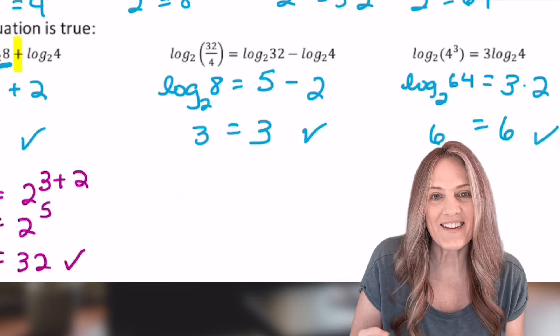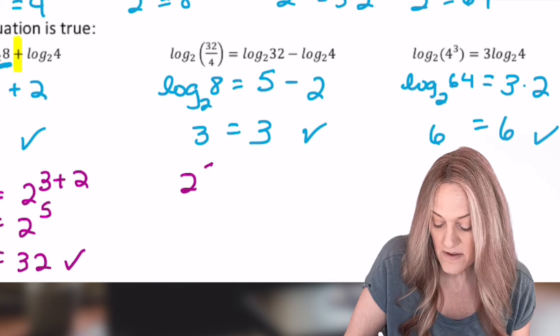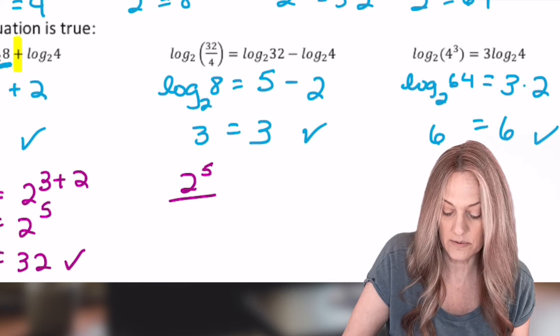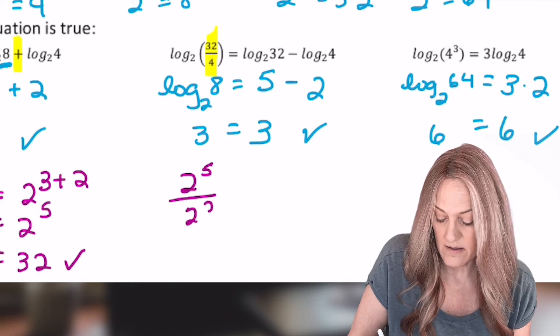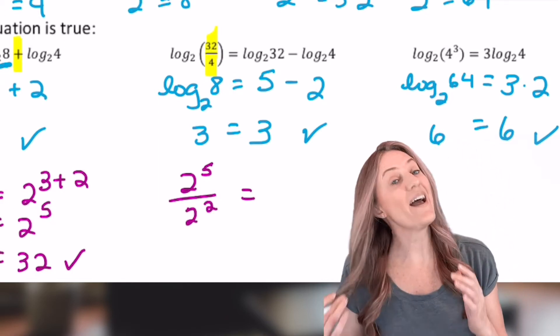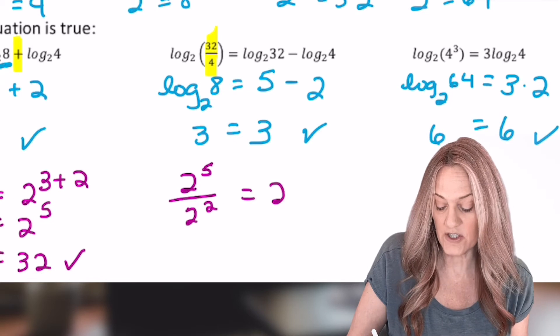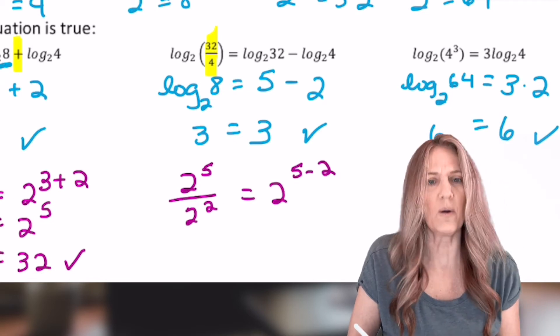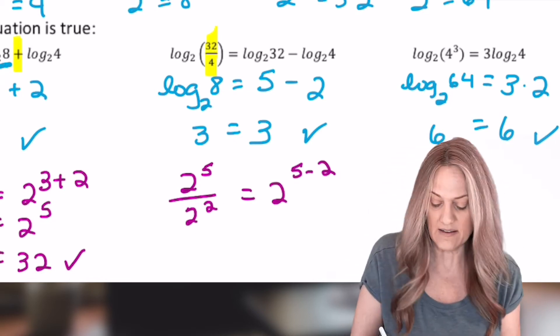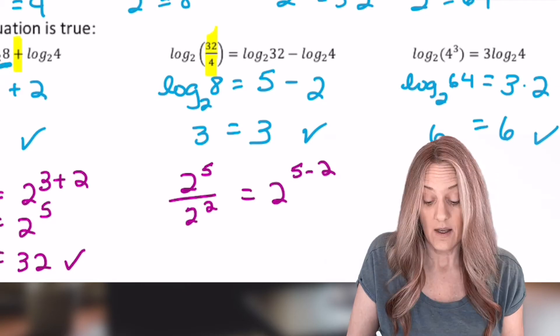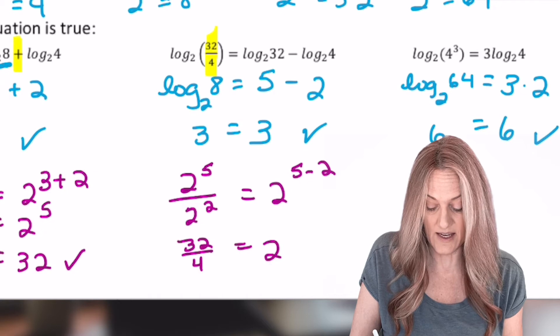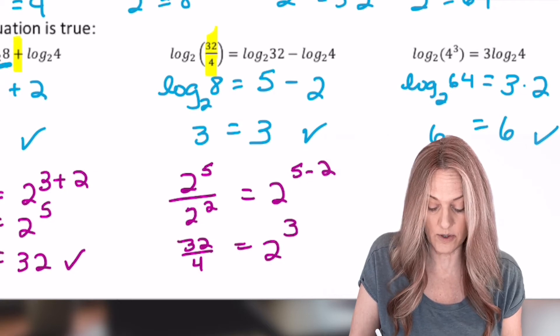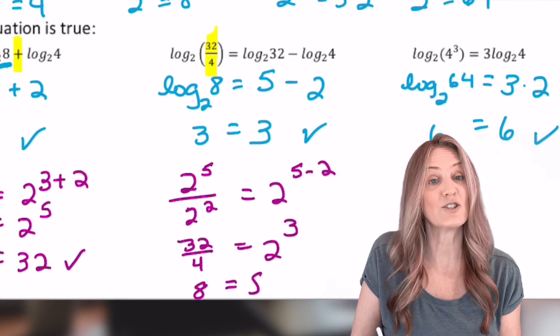Same idea on the next one. We have 2 to the 5th, that's 32, divided by 2 squared. Well, of course, we know from our exponent properties that that's simply 2 raised to the 5 minus 2. Let's go ahead and evaluate both sides. Well, that means we have 32 divided by 4 on the right-hand side, 2 cubed, and we know 32 divided by 4 is 8, and 2 cubed is 8.